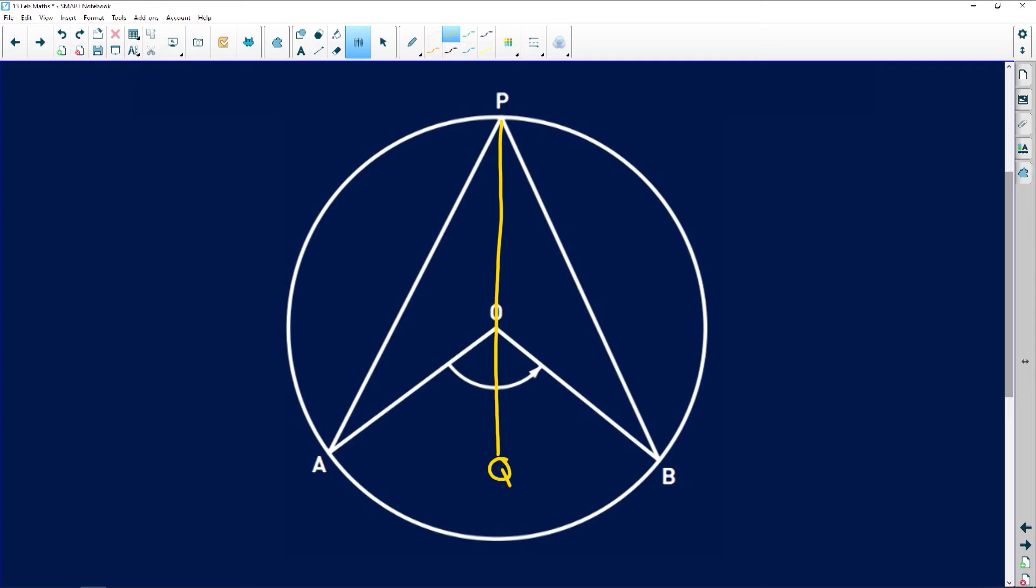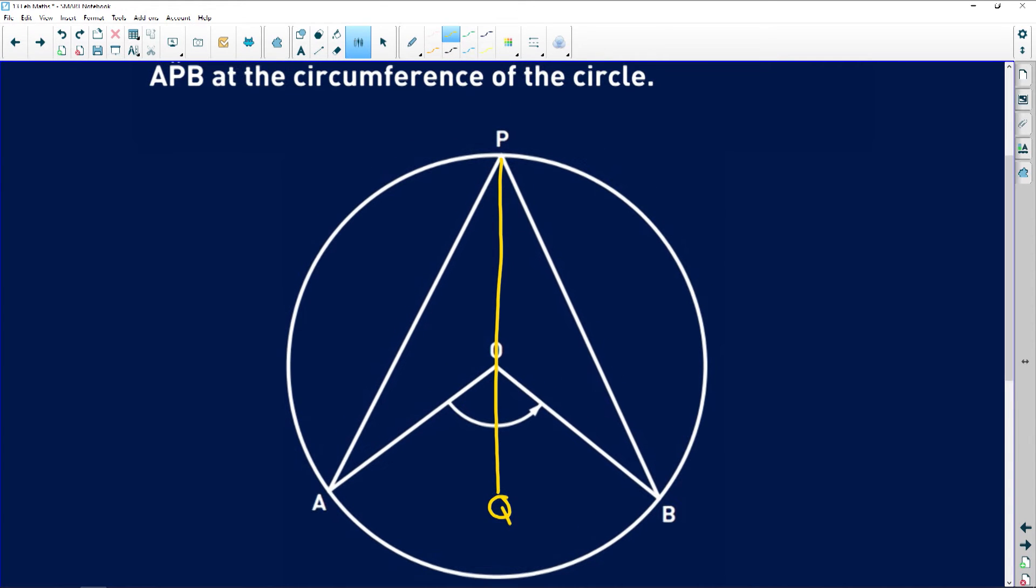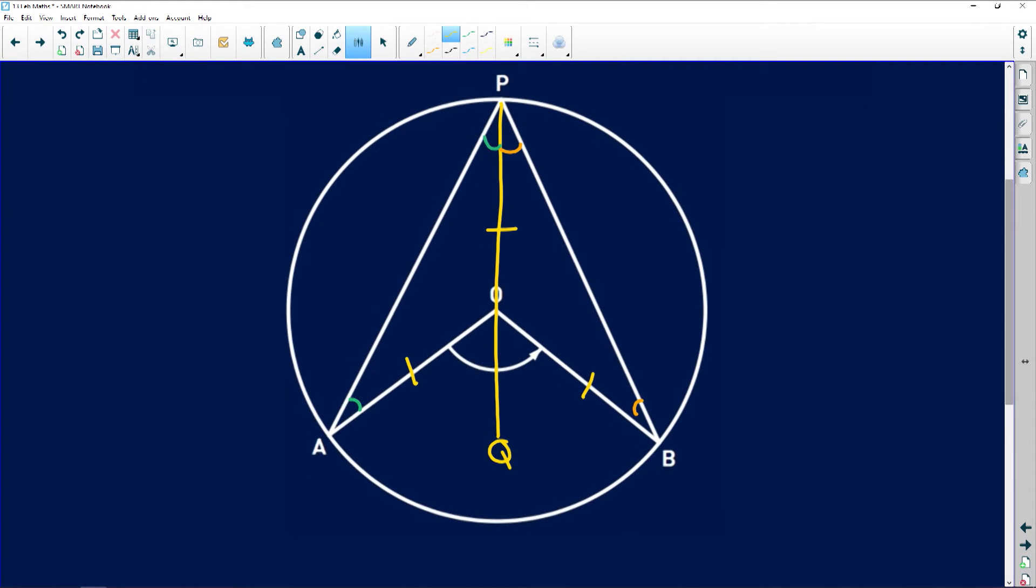So what that means is you join radius PO and you extend it to point Q. Very important for this proof. The moment you do that, radius, radius, radius, they are equal to each other, which means that in this triangle these two angles are equal and in this triangle these two angles are equal because of isosceles triangle. Once you've done that you can now start working on the left hand side.